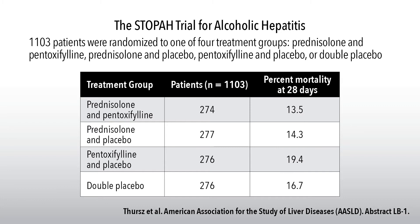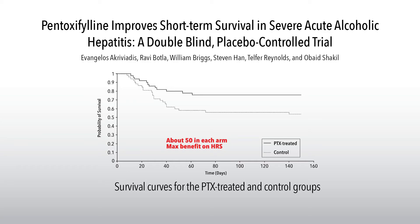The STOPAH trial for alcoholic hepatitis looked at prednisolone with pentoxifylline, prednisolone with placebo, pentoxifylline with placebo, or double placebo. Mortality rates were similar across these groups in this very large study. This put a pause on using prednisolone broadly, but we have to look critically at subset analyses and what occurred in special patient populations.